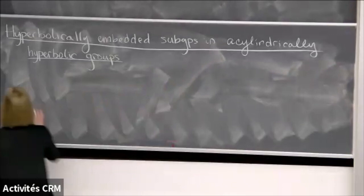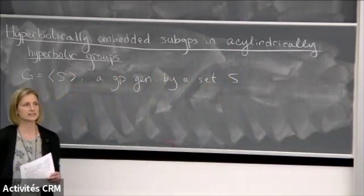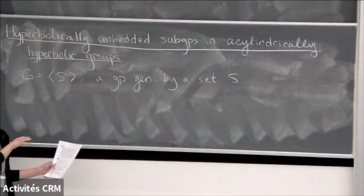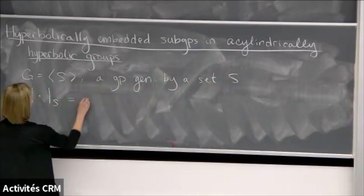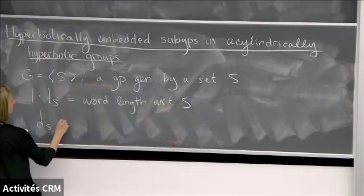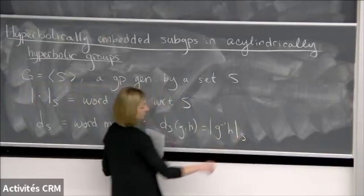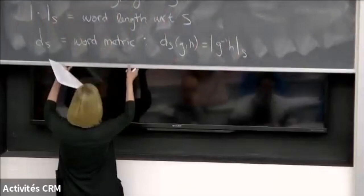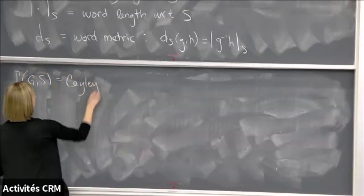I'm generally going to be thinking of a group G that will be generated by a set S. For most of what I talk about today, the set S does not need to be finitely generated — I'll talk a lot about infinite generating sets. If there's any point where I require this set to be finite, I'll explicitly say so. I'll use this notation for word length with respect to S, and D sub S for the word metric, where D sub S of g and h is the word length of g inverse h written with alphabet S. I'll use capital Gamma of G comma S for the Cayley graph of G with respect to S, which might be infinite.